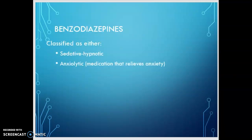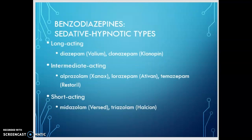Benzodiazepines are classified as either sedative, hypnotic, or anxiolytic — anxiolytic meaning medications that relieve anxiety. The way they're classified depends on the use and the dose; remember, they can be sedative or hypnotic based on dose, and the same applies to the anxiolytic effect. In Table 12-2 of your book, there's a list of sedative-hypnotics you might find helpful as you study. The benzodiazepines are categorized as long-acting, intermediate-acting, or short-acting, depending on their onset and duration of action.